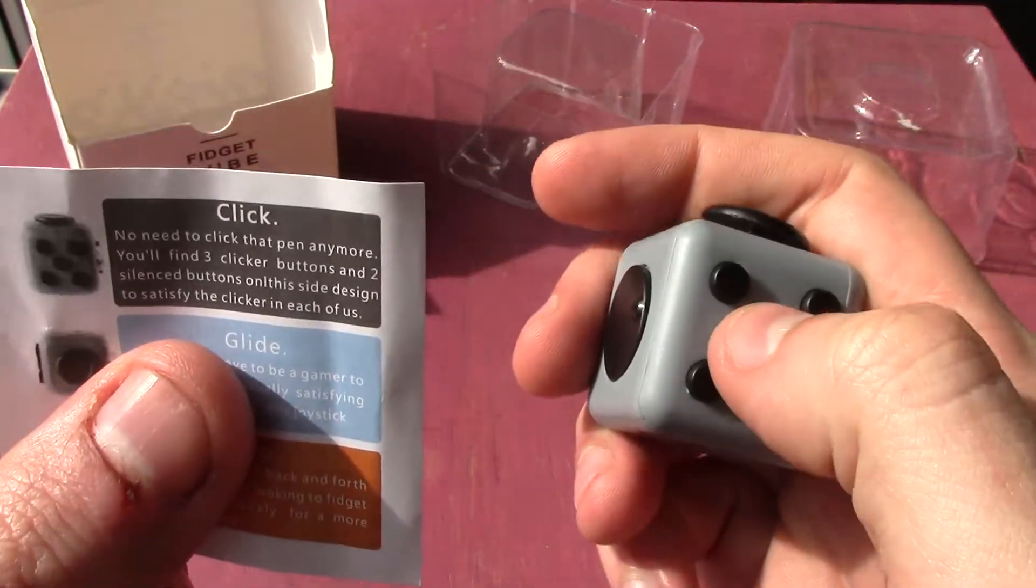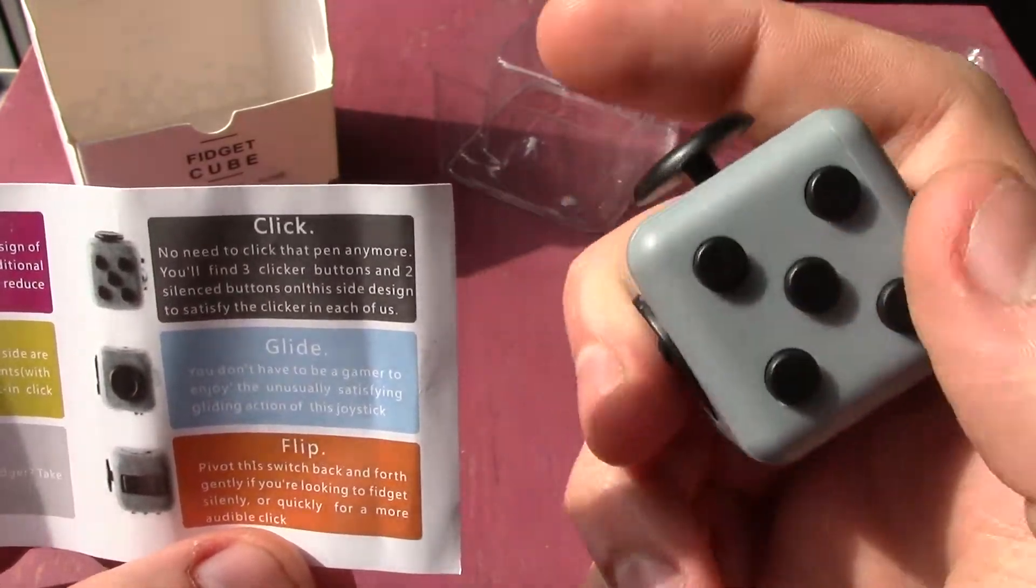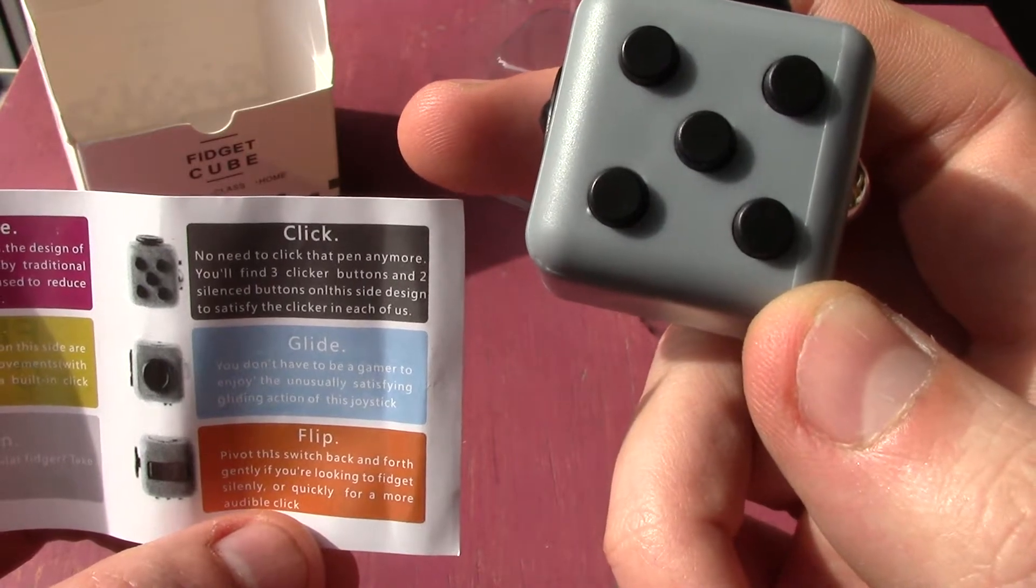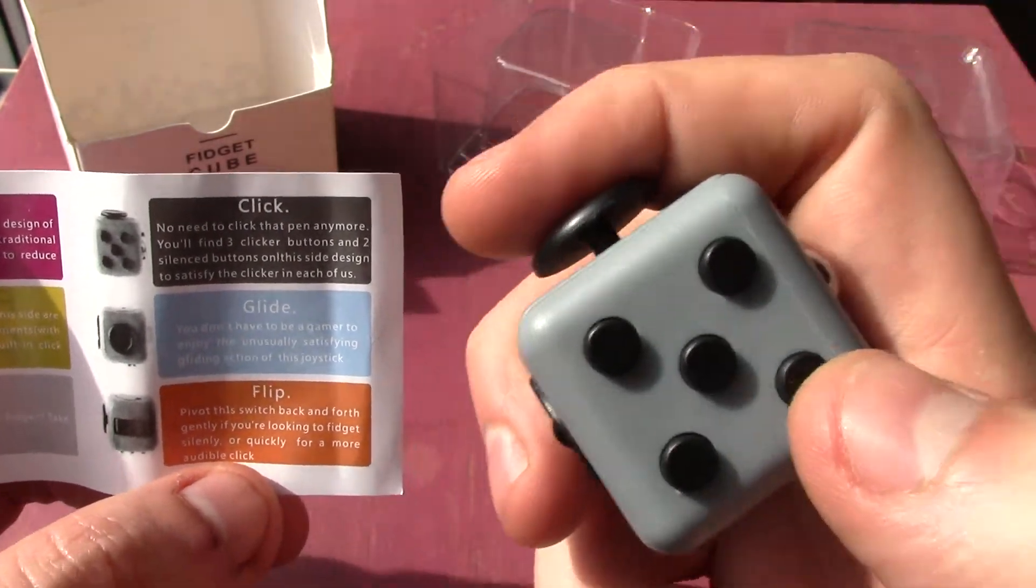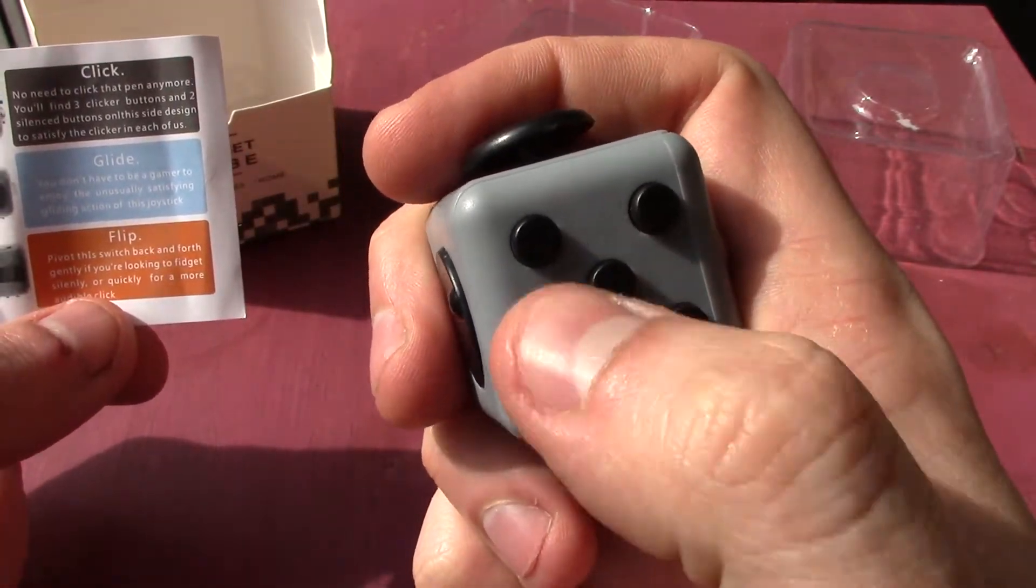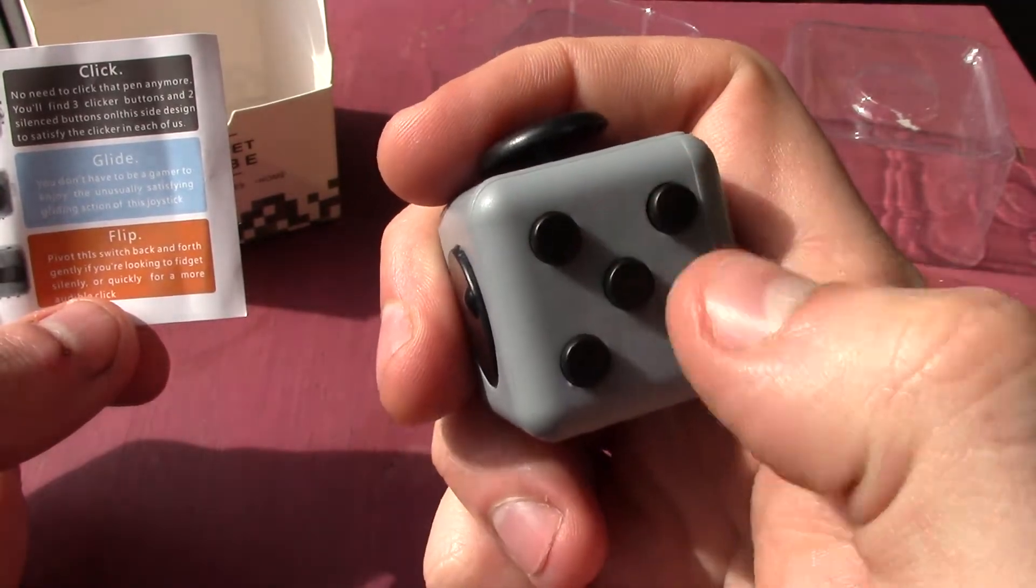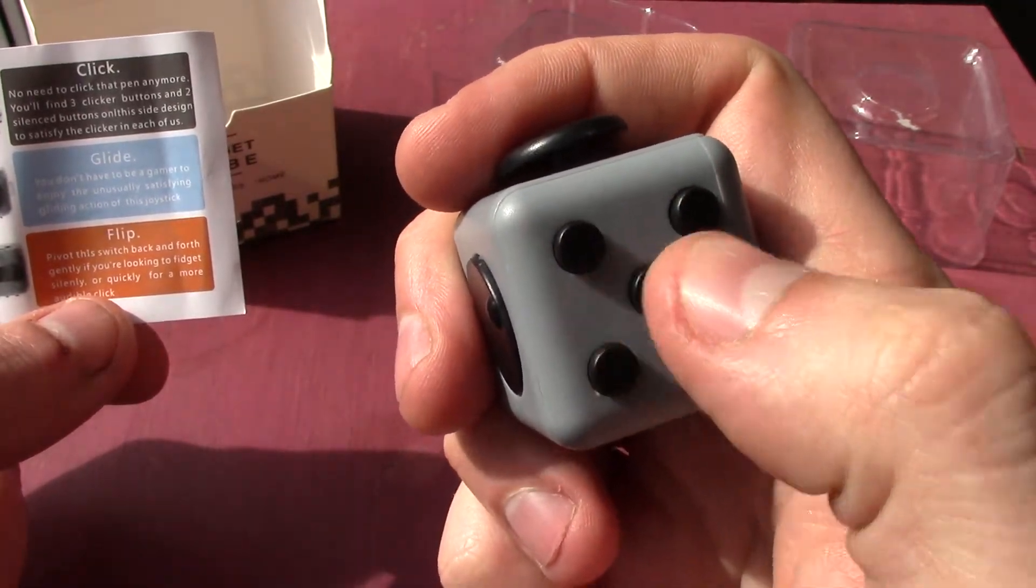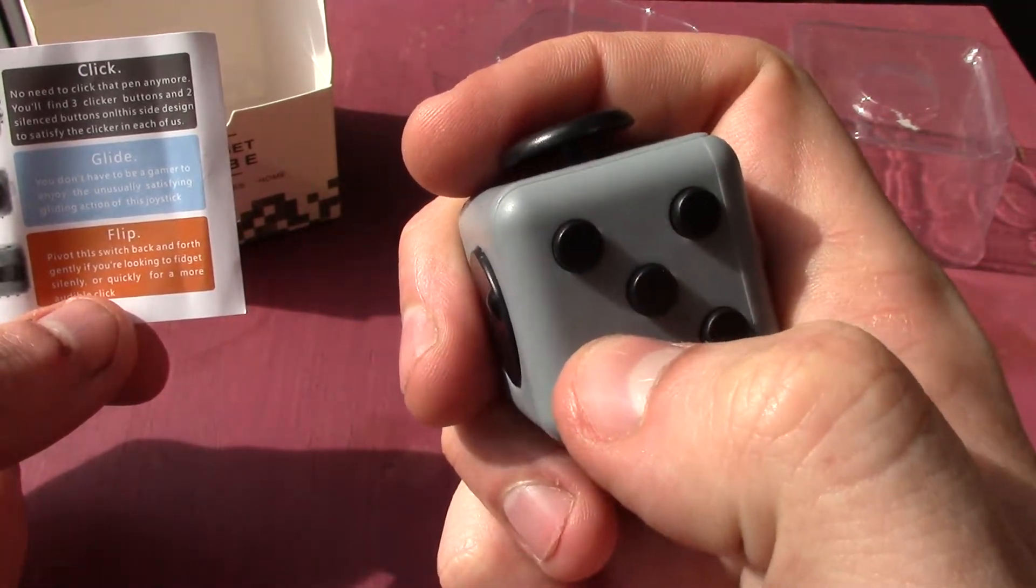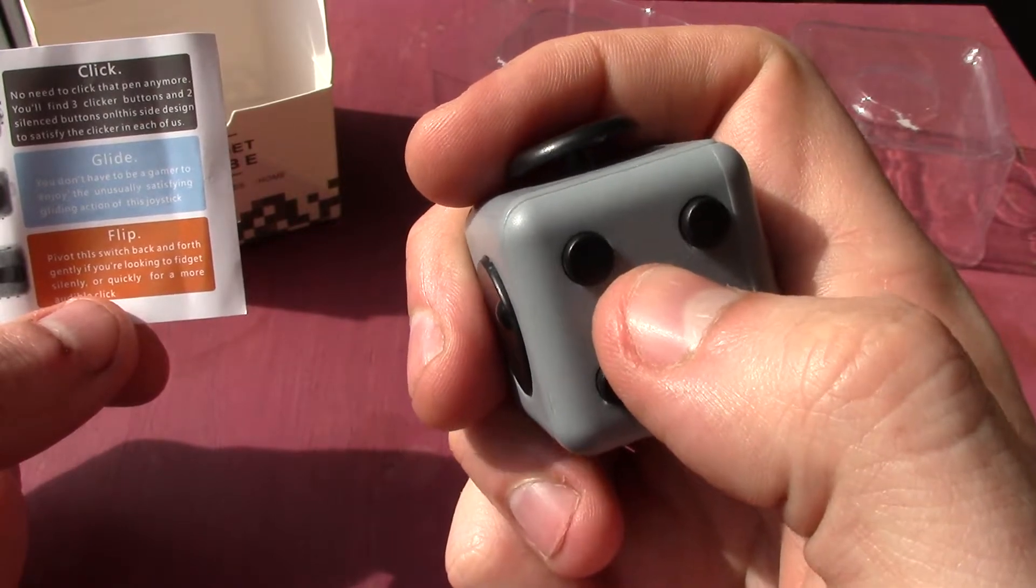Click, no need to click that pen anymore. You'll find three clicker buttons and two silenced buttons on this side designed to satisfy the clicker in each of us. Now I don't know if you can hear but it says there should be three clicking buttons and two silent ones. None of these are silent, they all make the noise. The middle one is slightly quieter than the others but it still clicks.